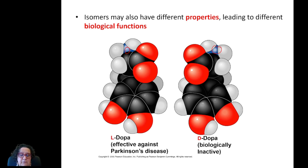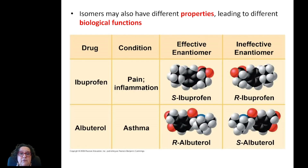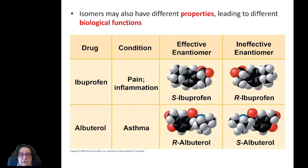When designing a compound that is going to interact with our bodies or living organisms, you have to think about whether it will have optical isomers and if so, whether they will interact in the same way — or could one be ineffective, or even detrimental. Two other common examples are albuterol, used in asthma inhalers, and ibuprofen, a widely used pain reliever. They both have enantiomers, or optical isomers, and in each case one is effective with the desired biological and pharmaceutical properties, while the other is ineffective.